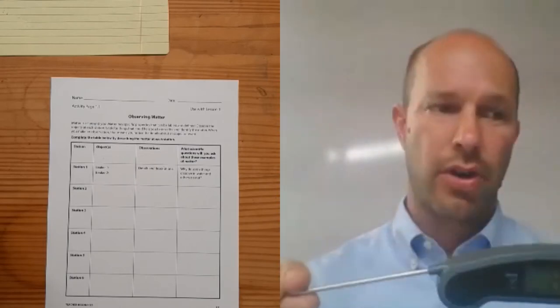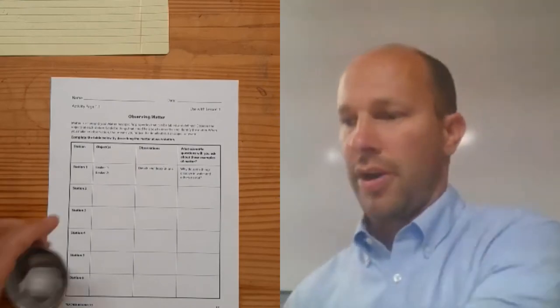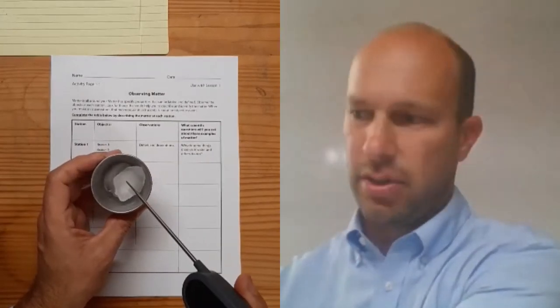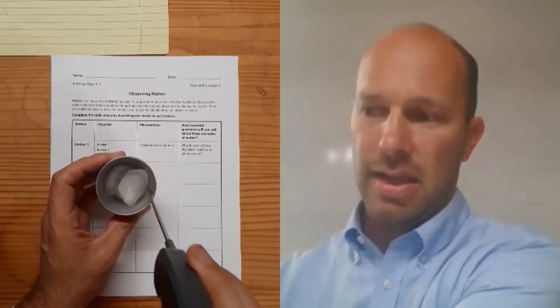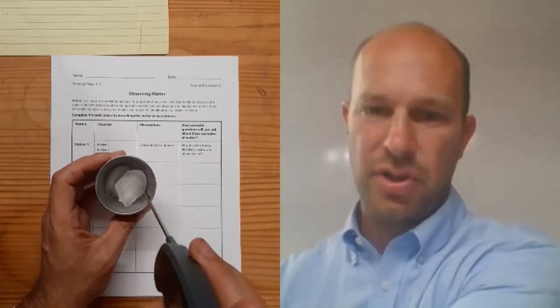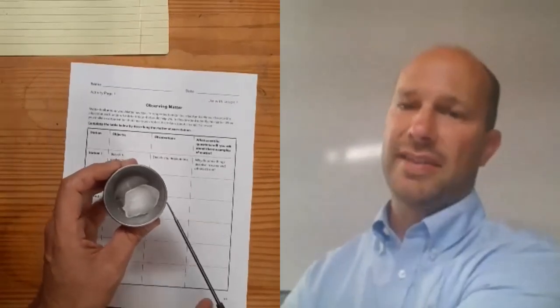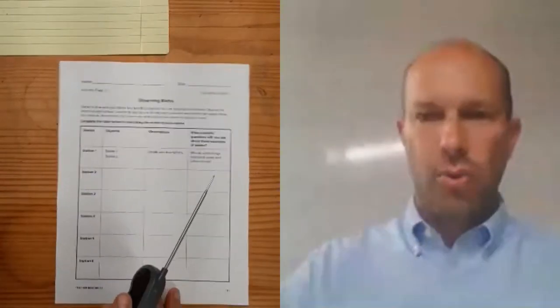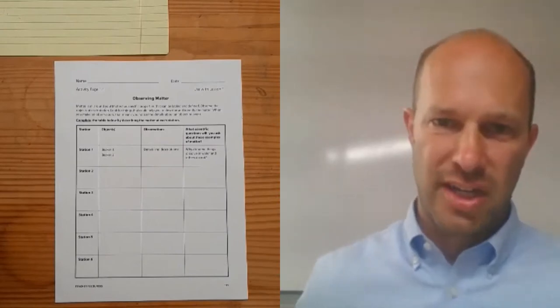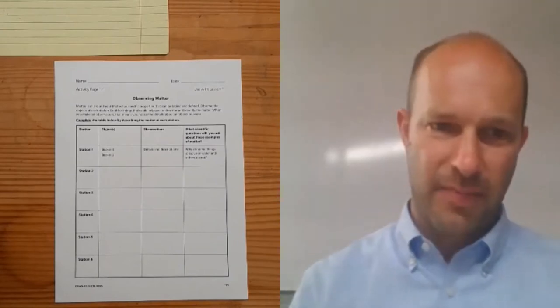A property of matter has to be something that can't change. So my temperature might be hotter or colder. Or if I have some water, it might start out as ice, which has one temperature, and then that water might melt and be a liquid that has another temperature, and it might even turn to gas. So it's always water, but since temperature can change, we wouldn't think of temperature as a property of matter.